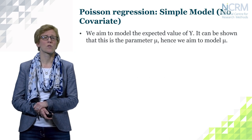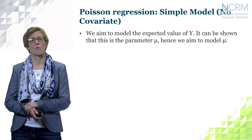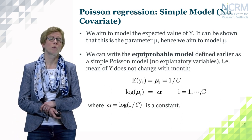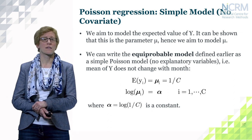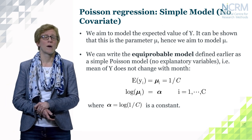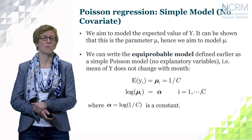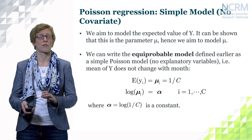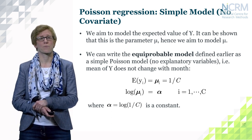For the simple model, we aim to model the expected value of Y, which is the parameter mu, so we effectively model mu in our Poisson model. Formalizing the equiprobable model, we write the expected value of Y — mu — as 1 over C, since we assume equal probability across weekdays. Using the link function, the log of mu equals a coefficient alpha, which is the coefficient we estimate in the model. Alpha is therefore the log of 1 over C in this case.